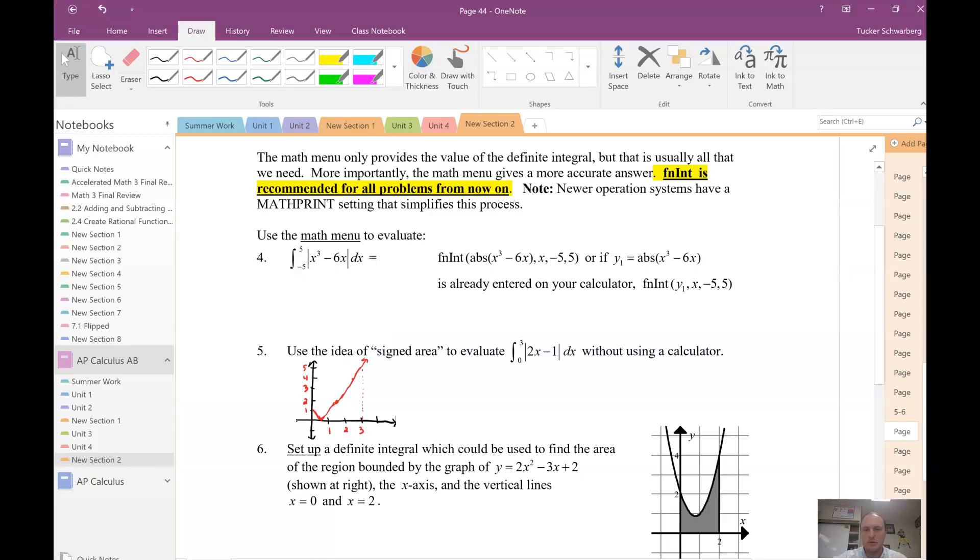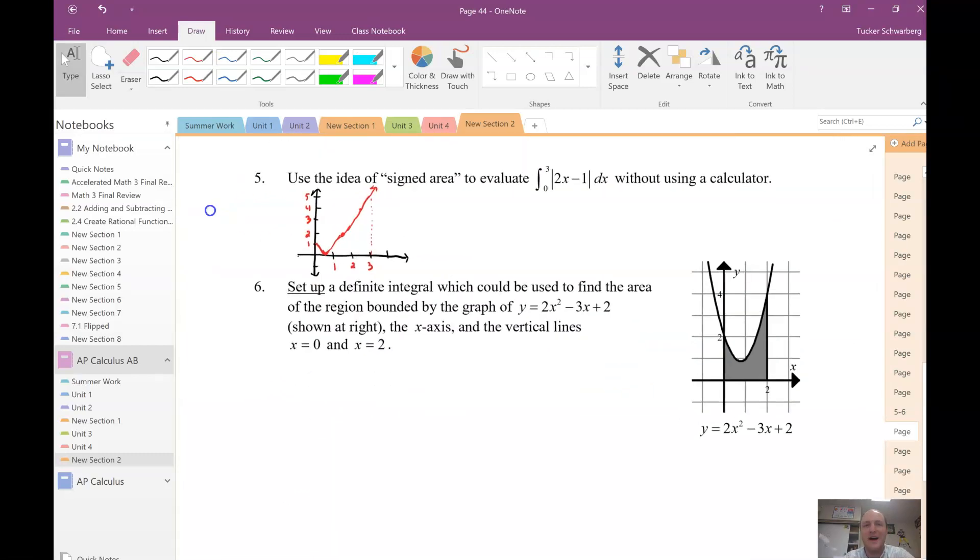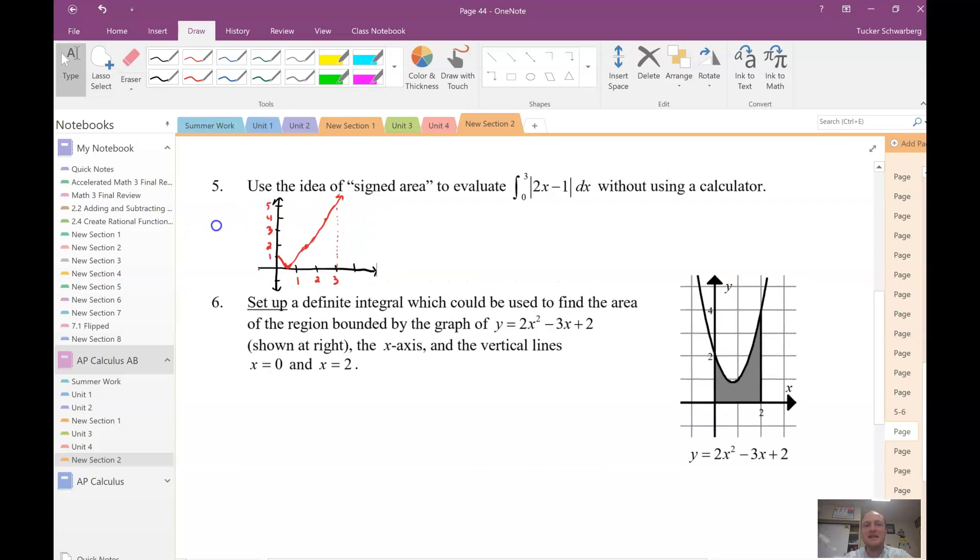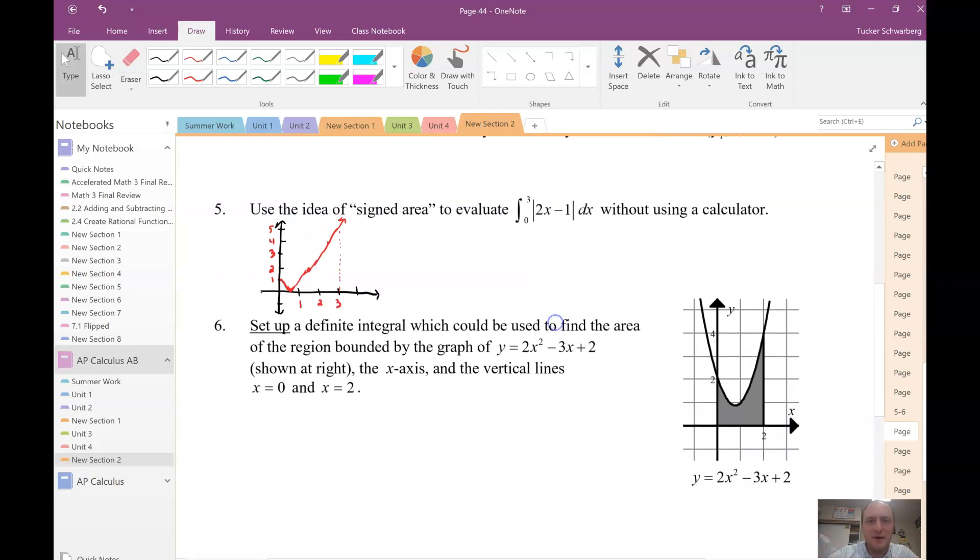Okay? All right. So the next part, part 5, it says use the idea of signed area to evaluate the integral from 0 to 3 of the absolute value of 2x minus 1 dx without using a calculator. So I went ahead and I drew the function ahead of time. And note, right, this function here, 2x minus 1, this is just a straight line.